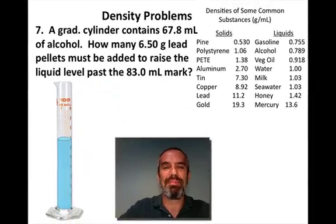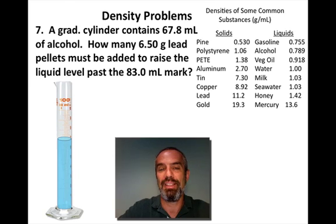Next problem. Number seven. Similar, but different twist. A graduated cylinder contains 67.8 milliliters of alcohol. How many 6.5 gram lead pellets must be added to raise the liquid level past the 83.0 milliliter mark? So we're going to add a bunch of lead pellets to this. How many pellets do we have to add to make the water level go above the 83 milliliter mark?